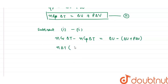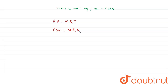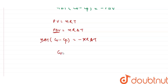Taking nΔT as common: nΔT(Cv − Cp) = −p·ΔV. The ΔU terms cancel out. From the ideal gas equation pV = nRT, at constant pressure p·ΔV = nRΔT. Substituting: nΔT(Cv − Cp) = −nRΔT. Dividing both sides by nΔT gives Cv − Cp = −R.